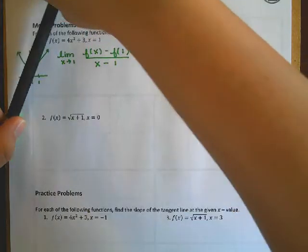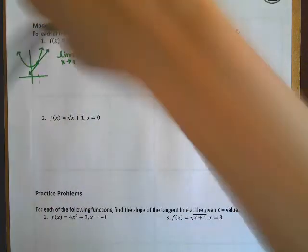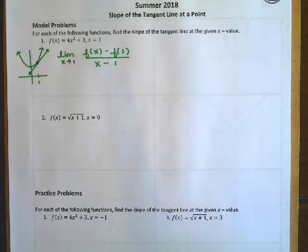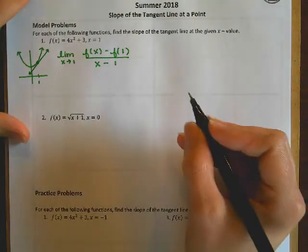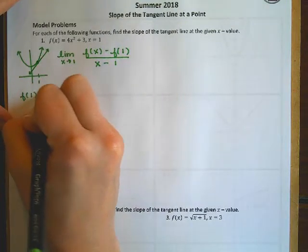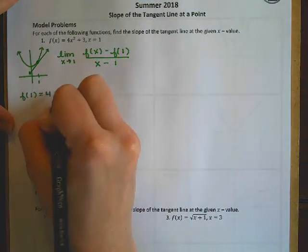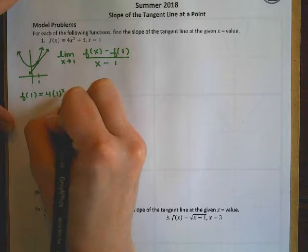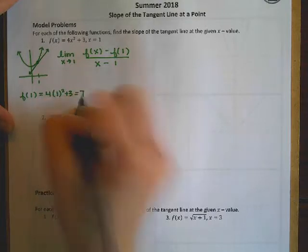And I need to figure out what f(1) is for this. And so that would be 4 times 1 squared plus 3, which would give me 7.